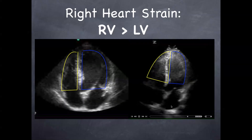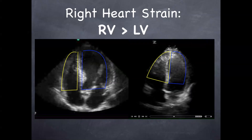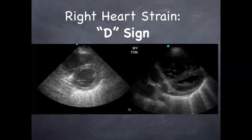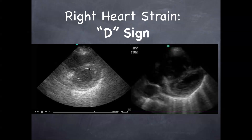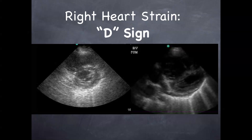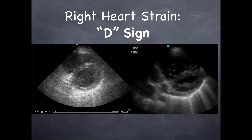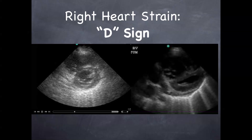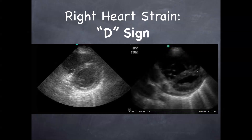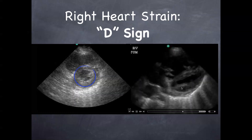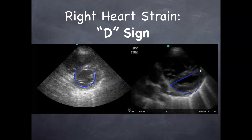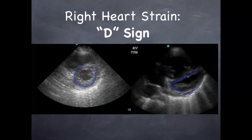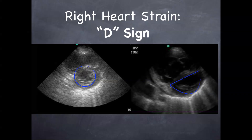LV bigger than RV is normal; RV bigger than LV is concerning. Here's your short axis — right ventricle closest to the probe, nice LV, pointed towards the right hip after getting the long axis and twisting. A normal ventricle should look like a circle or an O. What should cause concern is the D-sign — the LV looks like a D instead of an O. This essentially means there's so much pressure in the RV that it's pressing down onto the left ventricular wall and causing compression. From this view, definitely get a four-chamber view, but the D-sign should raise concern.